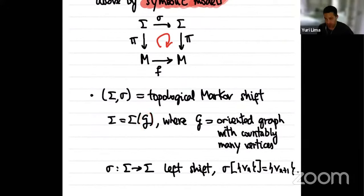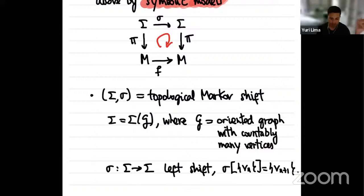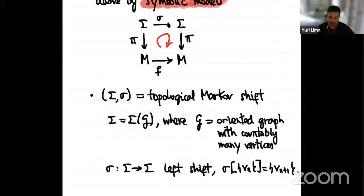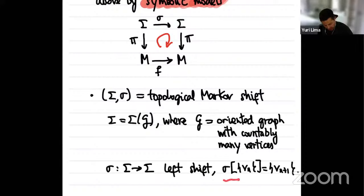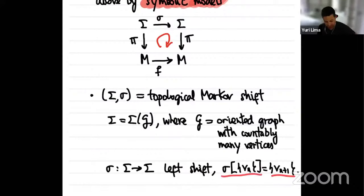A topological Markov shift is defined by an oriented graph G with a countable number of vertices. The paths on the graph form the symbolic space sigma, and the dynamics is the left shift — evolving the sequence by one step. So a sequence at position zero at vertex V0, at time one at V1, shifts to: at time zero it is at V1, at time one at V2, and so on.